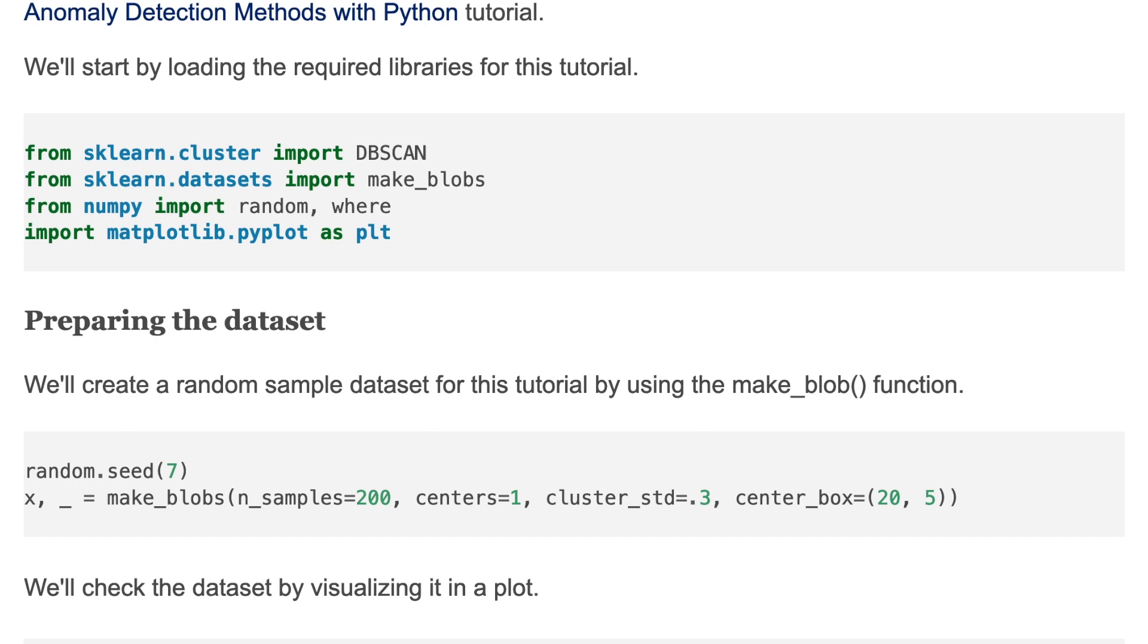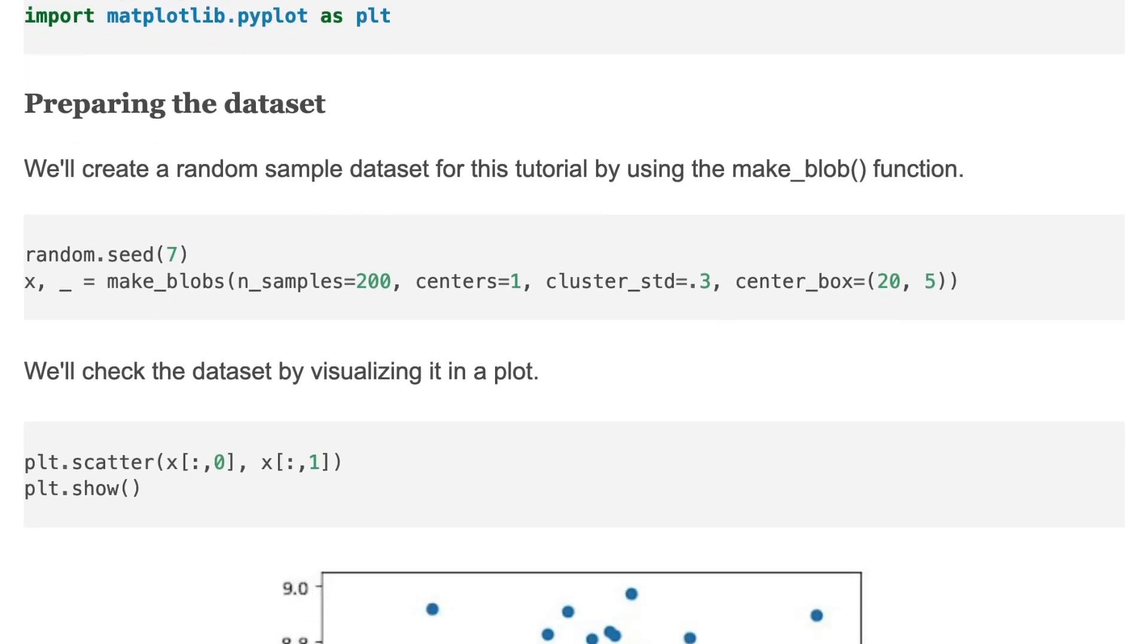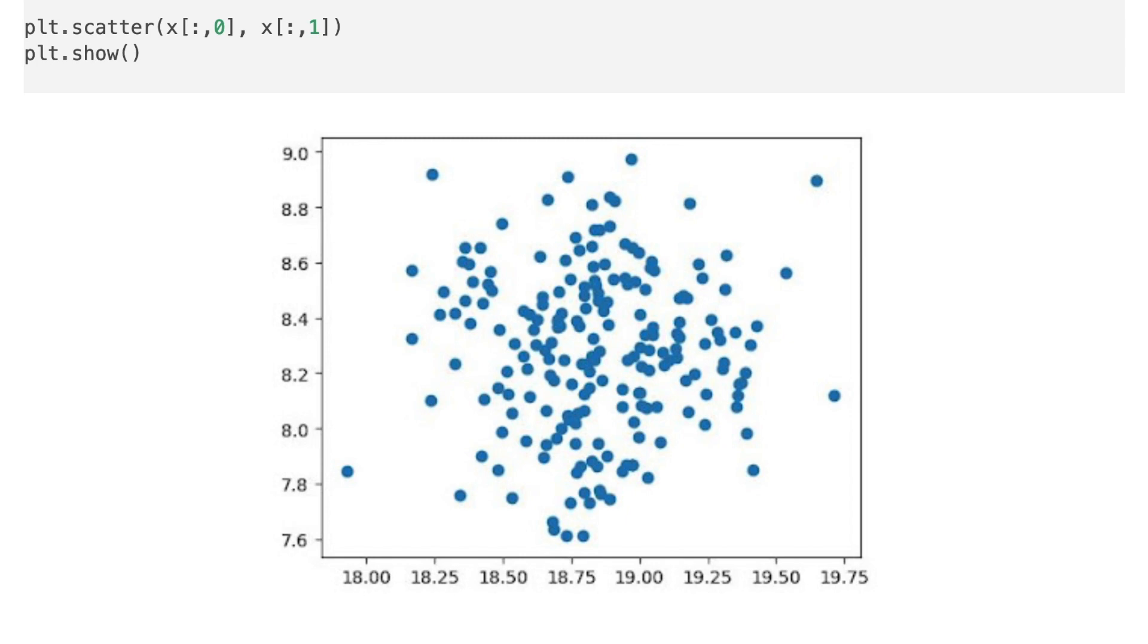We'll create random sample dataset for this tutorial by using the makeBlobs function. The code shows how to generate random data with makeBlobs and we'll visualize it in a plot. So here is the output. And our task is to detect outliers in this data.